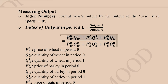In the index number formula, three agricultural commodities are considered: wheat (W), barley, and oats. The numerator sums the base-year price of each commodity multiplied by its current-year quantity — for example, P_W^0 × Q_W^1 for wheat, and similarly for barley and oats. The denominator sums the base-year price multiplied by the base-year quantity for each commodity. Both quantities and prices in the denominator are from the base year.